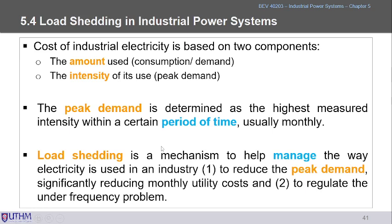Load shedding schemes help manage electricity use in industrial power systems. They can reduce peak demand — for example, shifting a production line to night time to avoid peak hours — and regulate under-frequency problems caused by very heavy overloads, preventing blackouts if not managed properly.